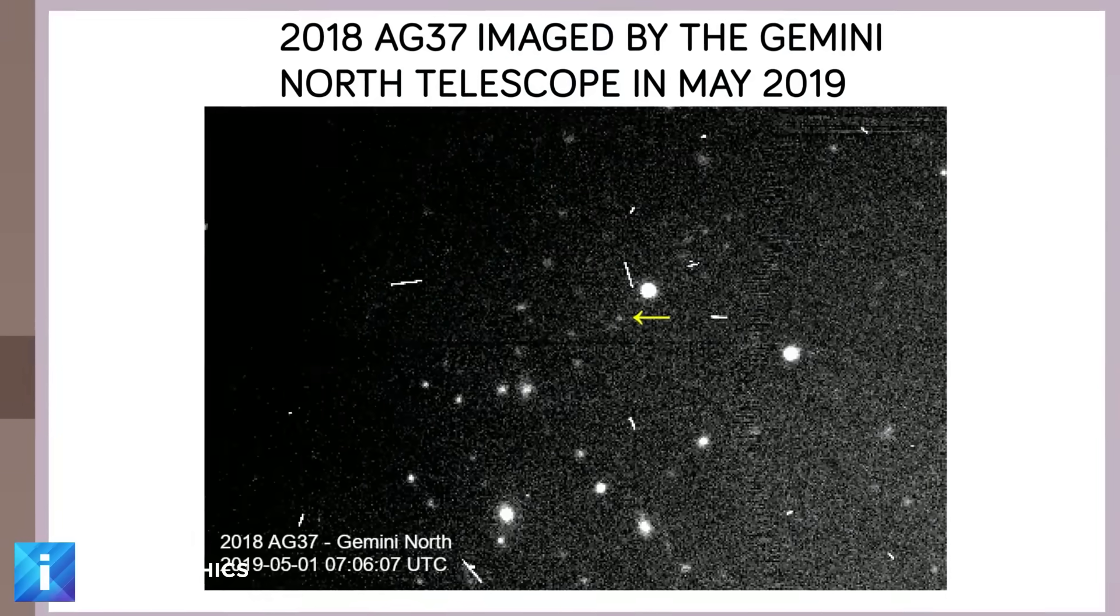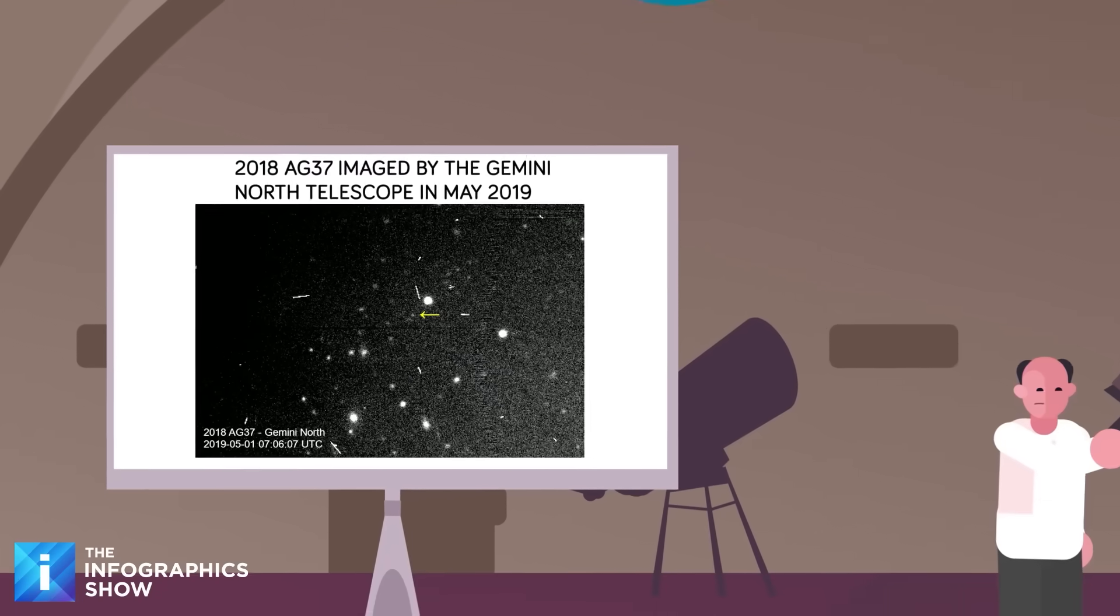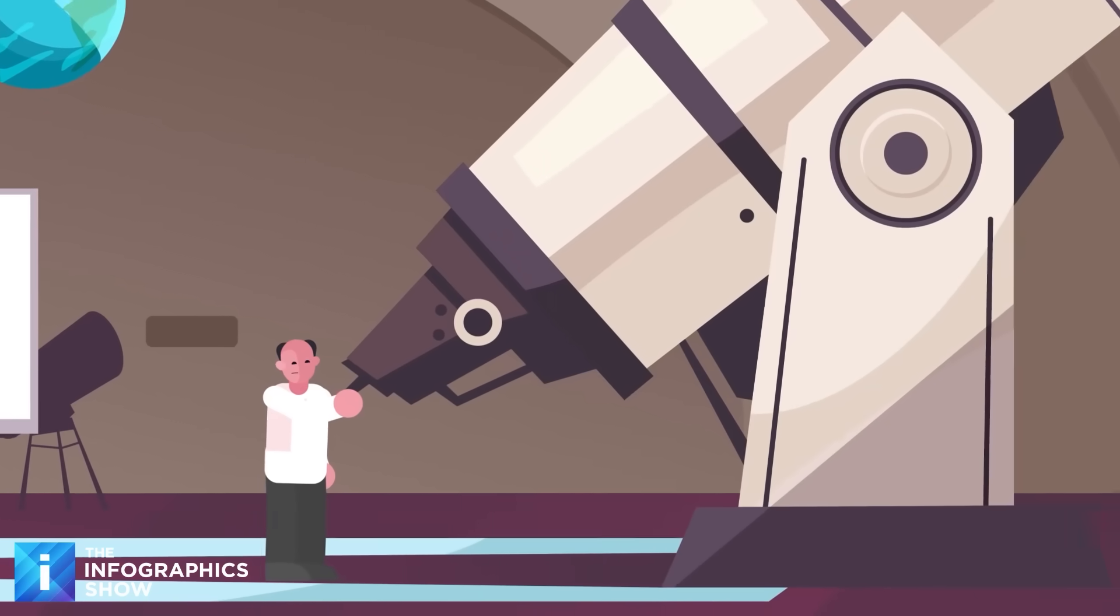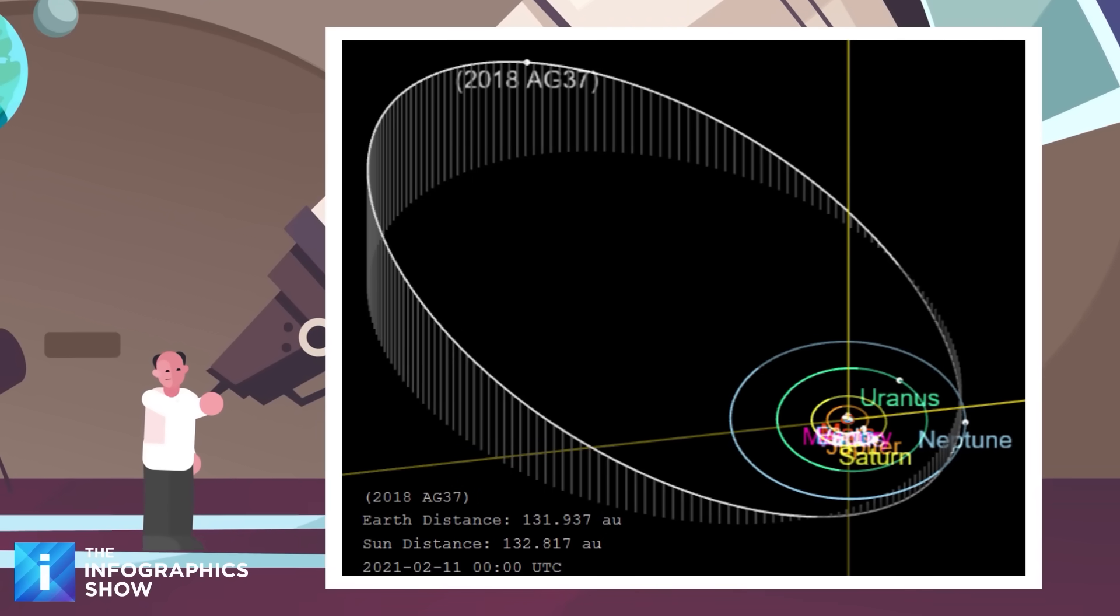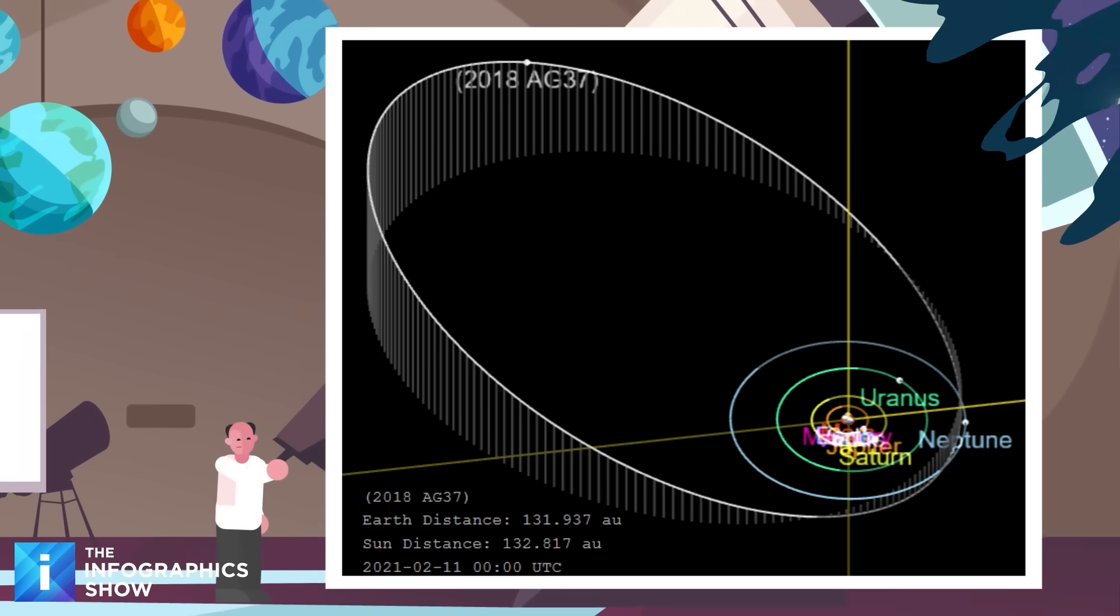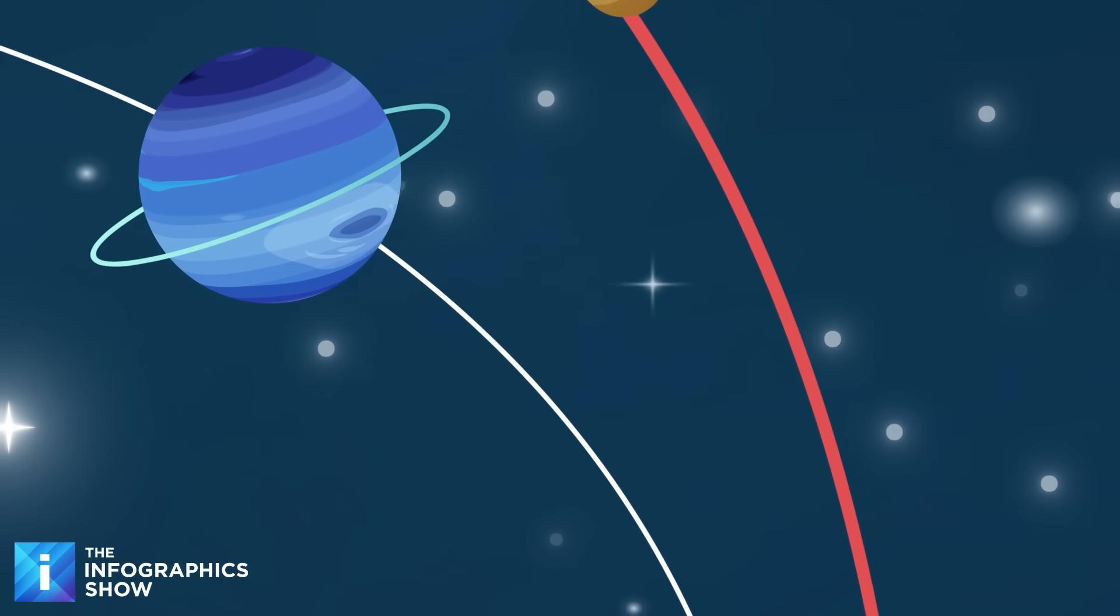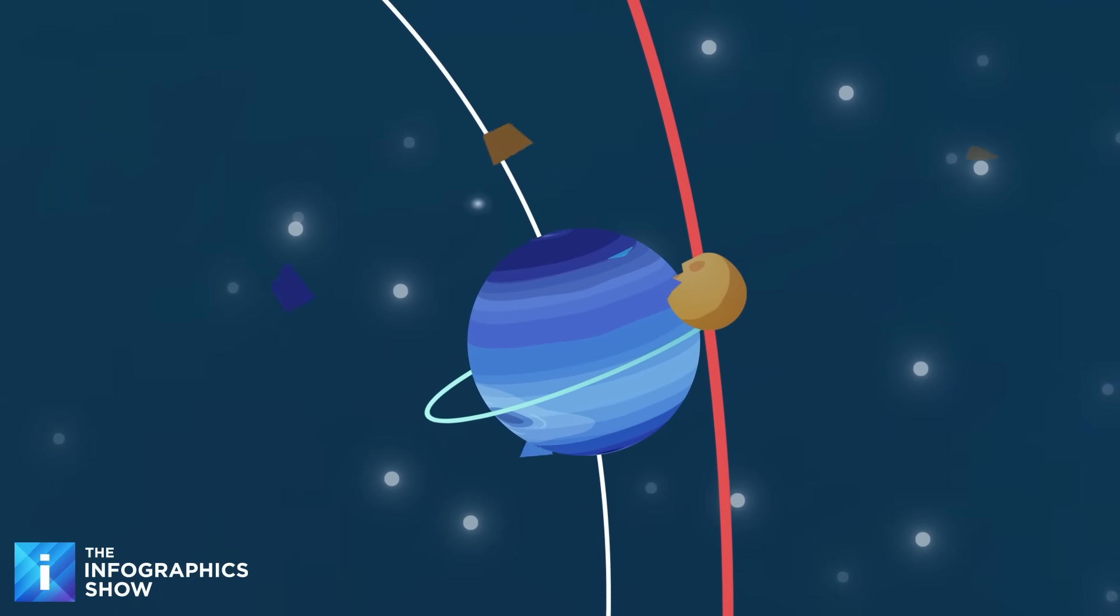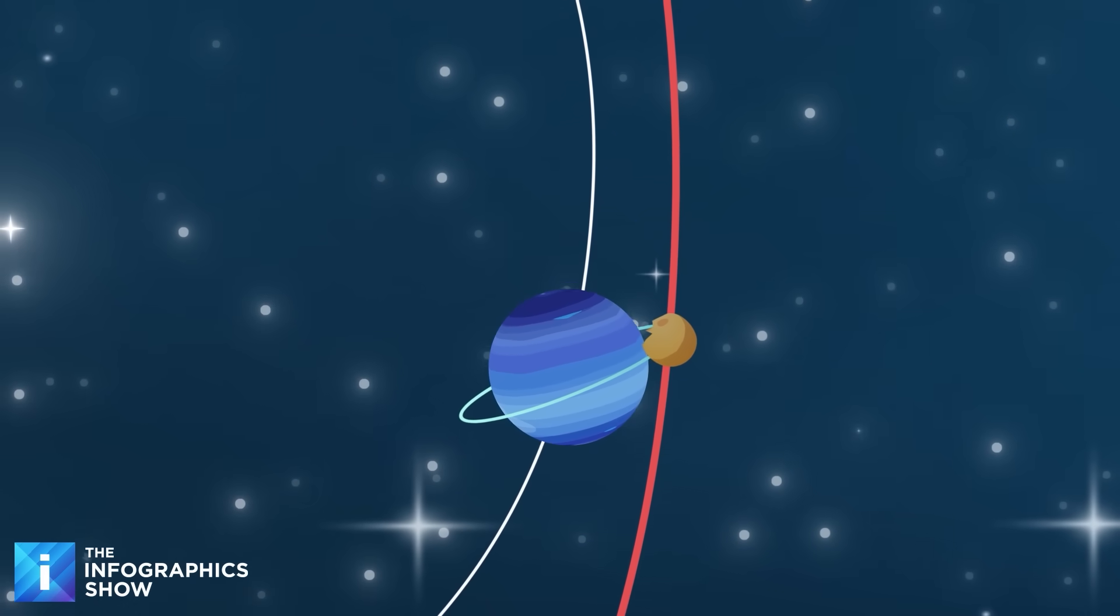Finally, we arrive at 2018 AG37, appropriately nicknamed Far, Far Out. This is the most distant known object in our solar system, orbiting at an average distance of 132 astronomical units from the sun. But its orbit is highly elliptical, ranging from 27 AU to 175 AU, which means that it takes about 1,000 years to complete one orbit. A major factor at play here is the gravitational influence of Neptune, which has likely played a role in shaping Far, Far Out's widely divergent orbit. Far, Far Out's orbit crosses paths with Neptune, meaning gravitational interactions between the two could eventually shift its trajectory or even lead to risky close encounters.